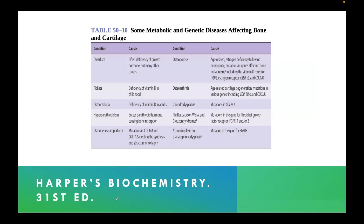From Harper's Biochemistry: osteogenesis imperfecta involves a gene mutation in collagen 1. The mutation in the gene for achondroplasia is FGFR3. Dwarfism is growth hormone deficiency. Rickets is vitamin D deficiency in children, while osteomalacia is vitamin D deficiency in adults.